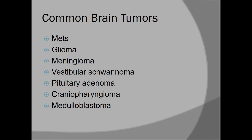What are the common brain tumors? As already mentioned, metastases are the most common brain tumors, and gliomas are the most common primary brain tumors. Other types include hemangiomas, meningiomas, schwannomas, pituitary adenomas, and many others — there is a long list of brain tumors.